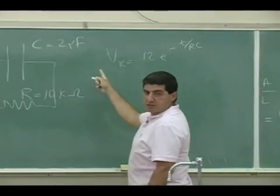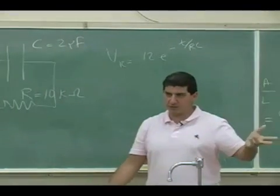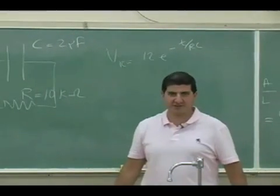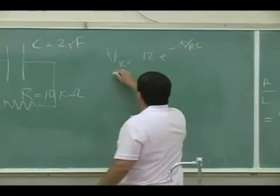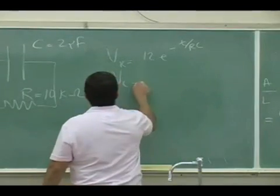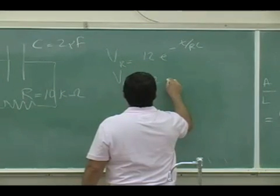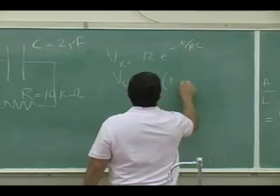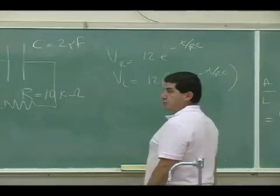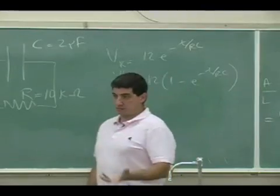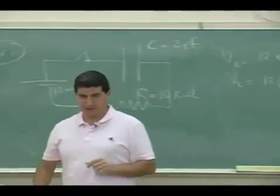The voltage across the resistor should decay, like we saw in the test — 12 times e to the minus t over RC. The voltage across the capacitor should charge and increase as a function of time.